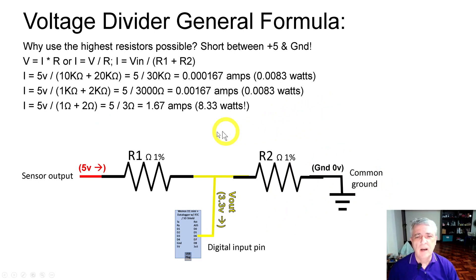I mentioned you want to use the highest resistor values you can, and this is why. I've re-swizzled the basic formula for voltage equals current times resistance. Basically you can get current equals VIN divided by R1 plus R2, so we can find out how much current each resistor pair is costing us in power drain. The first one, we plug in our numbers: 5 volts divided by 10K plus 20K. We end up with 0.000167 amps or 0.0083 watts. That's a tiny amount, pretty tolerable even if you're running on batteries.